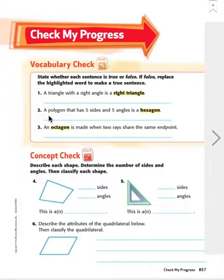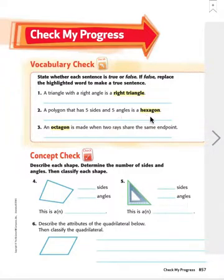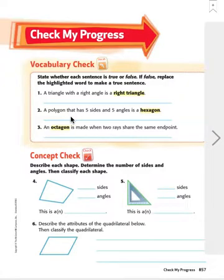Number two: a polygon that has five sides and five angles is a hexagon. That one is false. A hexagon actually has six sides and six angles, not five sides and five angles. So let's write false, and then what is the name of a polygon with five sides and five angles? That is a pentagon. P-E-N-T-A-G-O-N.